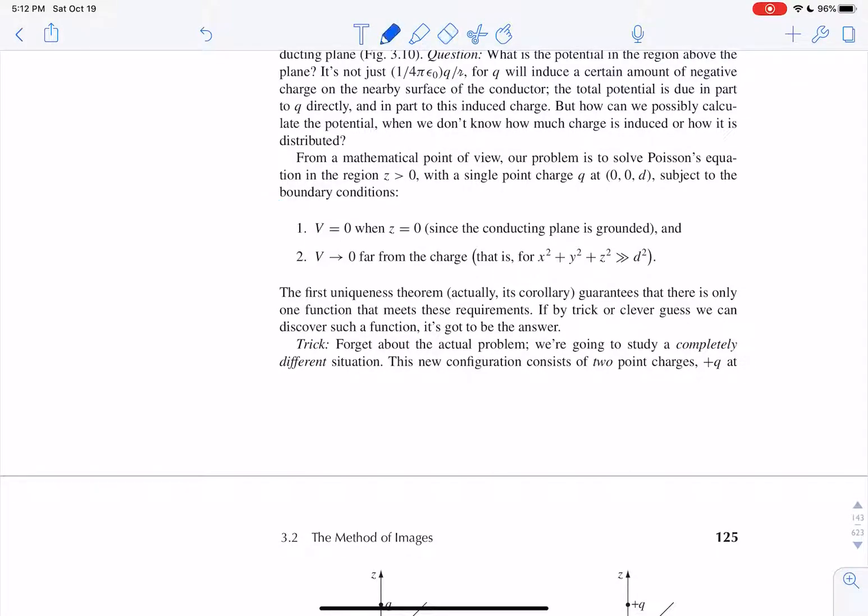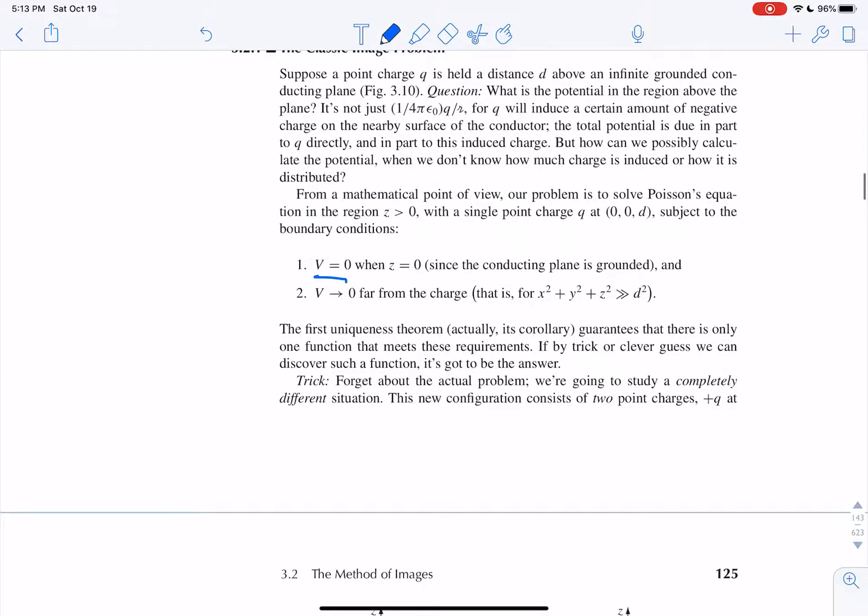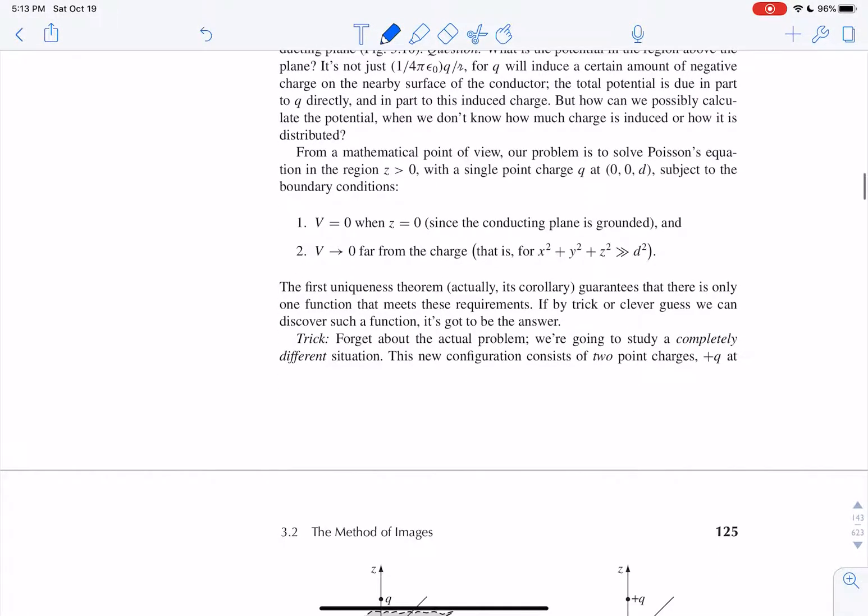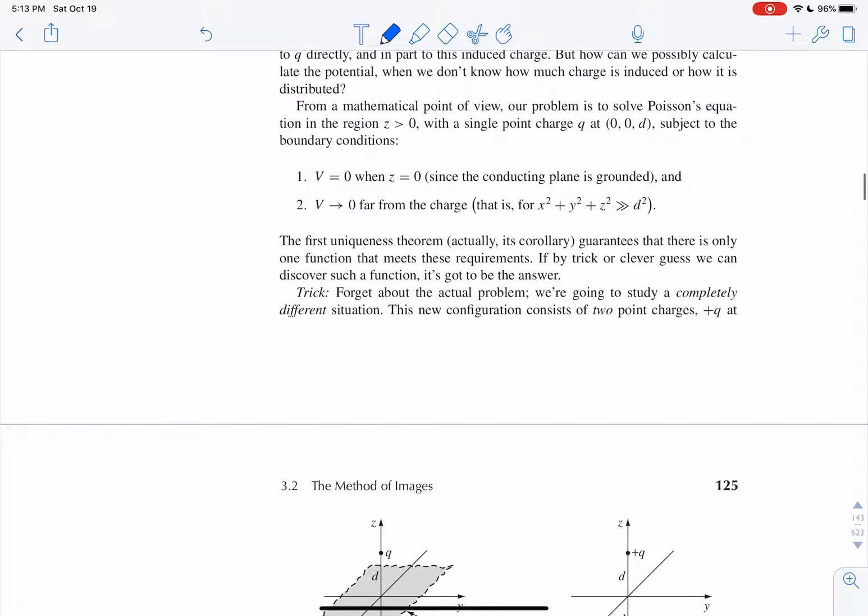And again, your boundary conditions are the key of every problem, of solving every E and M problem. So the boundary conditions here that you care about is that v equals zero when z equals zero, because it's a ground conducting plane, so there's no potential at that surface. And then you also want the potential to go to zero very far away from q. So if you're really far away from the charge, then v should be zero.